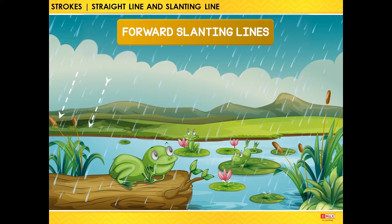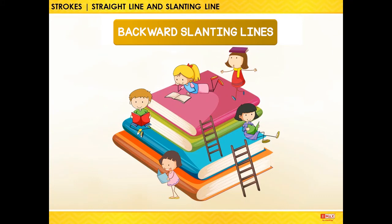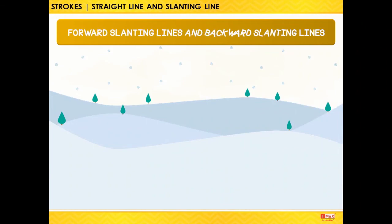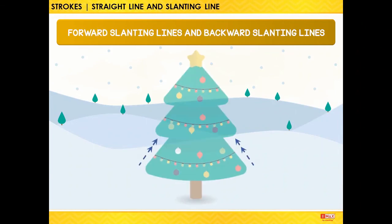Look at the raindrops — they are forming forward slanting lines. Now look at the slanting lines made by the laden; they are backward slanting lines. Look at the tree — it has both forward and backward slanting lines.